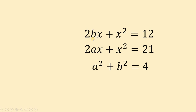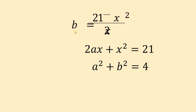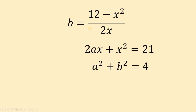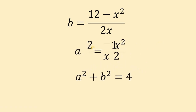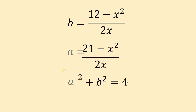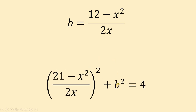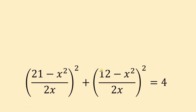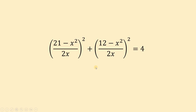Since our goal is to solve for x², we rewrite a and b in terms of x, then substitute into the third equation. From the first reduced equation, solving for a: a = (21 − x²) / (2x). From the second reduced equation, solving for b: b = (12 − x²) / (2x). We now replace a with (21 − x²)/(2x) and b with (12 − x²)/(2x) in the equation a² + b² = 4.